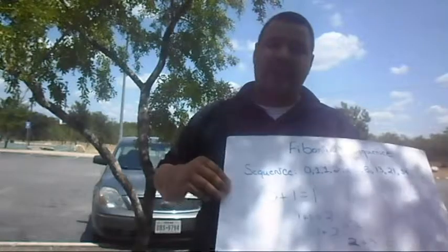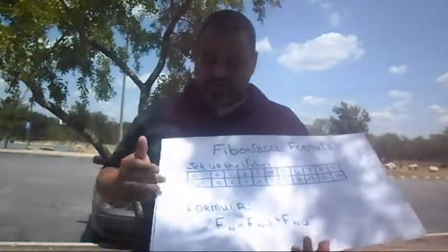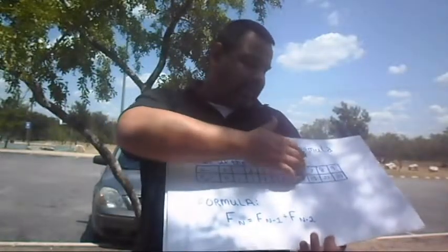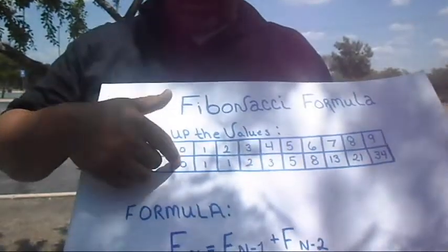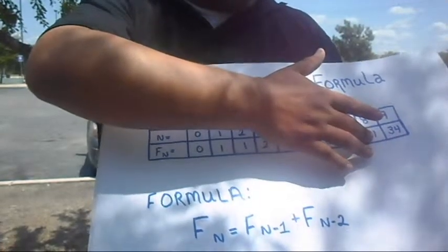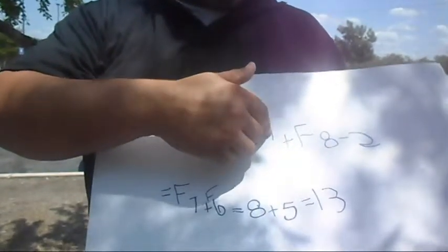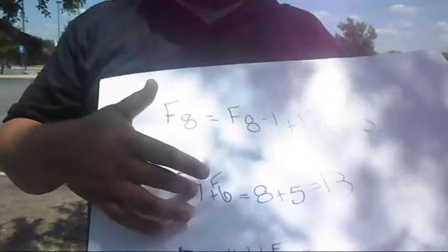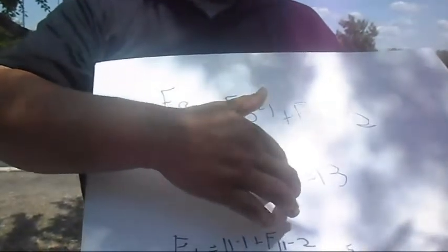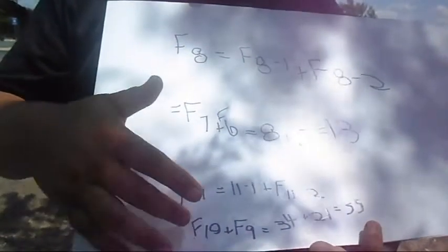Now that we have seen the sequence we're ready to see the Fibonacci formula. The setup of the values: n equals 0, 1, 2, 3, 4, 5, 6, 7, 8, 9, and F(n) equals 0, 1, 1, 2, 3, 5, 8, 13, 21, and so on and so forth. Putting that into a mathematical equation: F(8) = F(8-1) + F(8-2) = F(7) + F(6) = 8 + 5 = 13. And F(11) = F(11-1) + F(11-2) = F(10) + F(9) = 34 + 21 = 55.